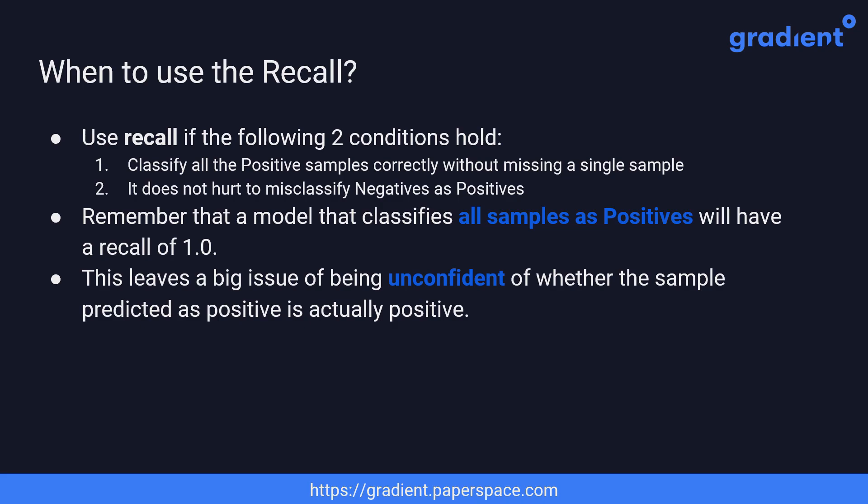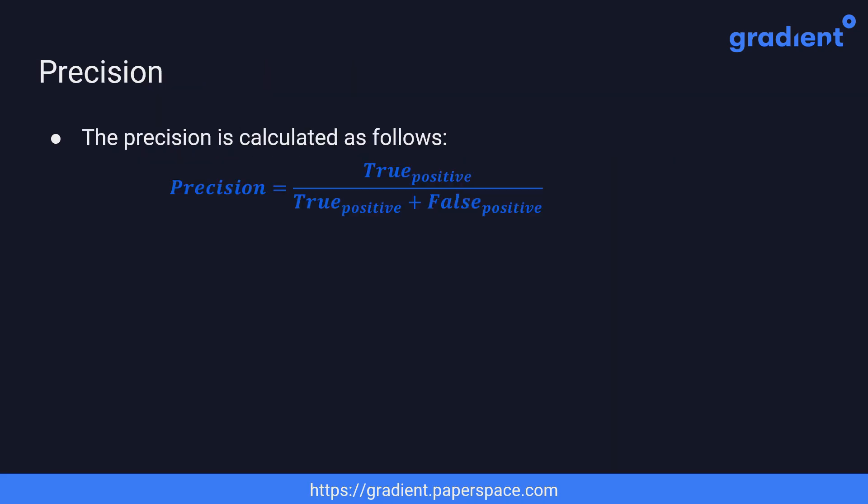To make decisions with confidence about whether a sample classified as positive is actually positive, we use precision. Precision is calculated as the ratio of true positives to the sum of true positives and false positives.